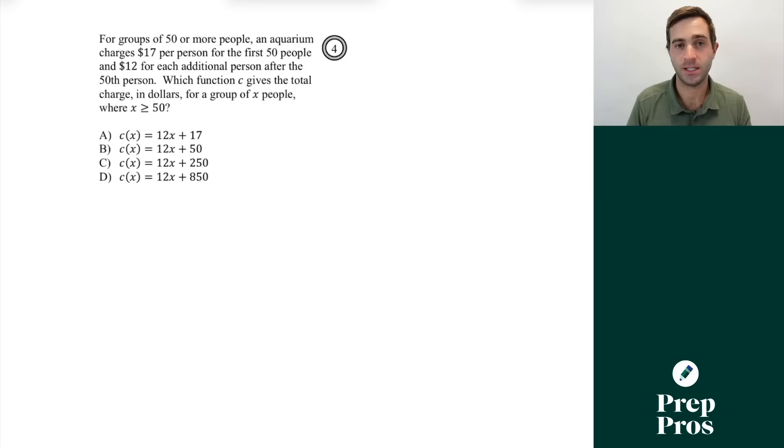Now the next thing you're going to see on your SAT are what we can think of as essentially fake y-intercept questions. So these are always questions that look very similar to this and most students end up confidently missing these. So here we see for groups of 50 or more people an aquarium charges $17 per person for the first 50 people and $12 for each additional person after the 50th person. Which function c gives the total charge in dollars for a group of people where x is greater than or equal to 50? Now we're not going to do the technical way kind of by hand because you really shouldn't be doing that you should just be plugging values in. So the best thing we can always do is solve for the easiest situation where we meet this. So let's just say we're going to solve for how expensive it is for 51 people.